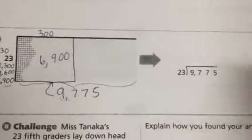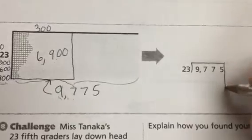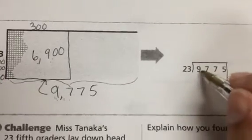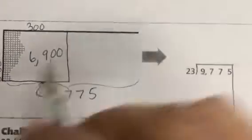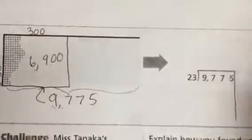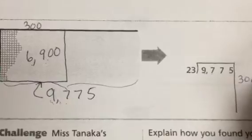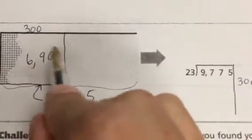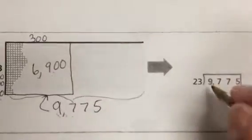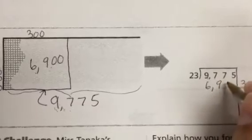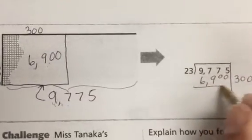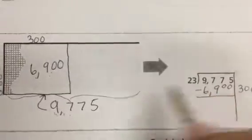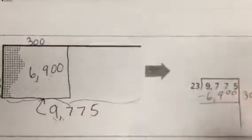When I look at my partial quotients over here, I can divide 9,775 by 23 300 times to get a partial product here of 6,900. And then I'm going to subtract to see how many squares I have left to find in my area model.